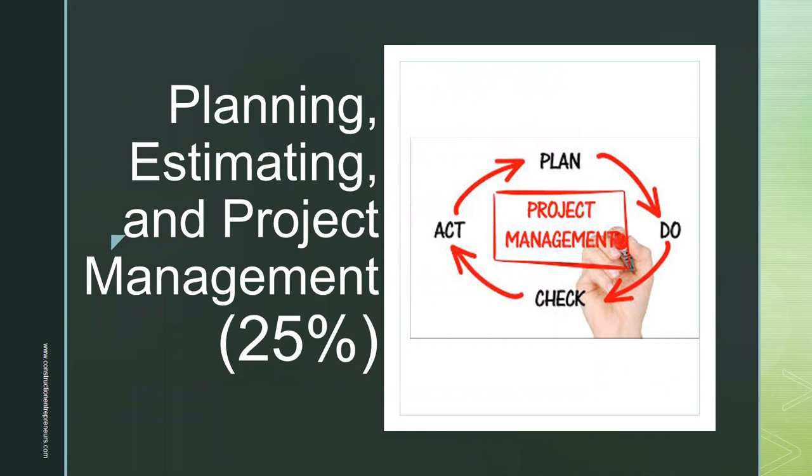There are a total of eight major sections for the General Engineering A examination. Number one is planning, estimating, and project management at 25% of the state exam. That's going to cover plans and specifications, estimating standards, codes and regulations, and general building mathematics.